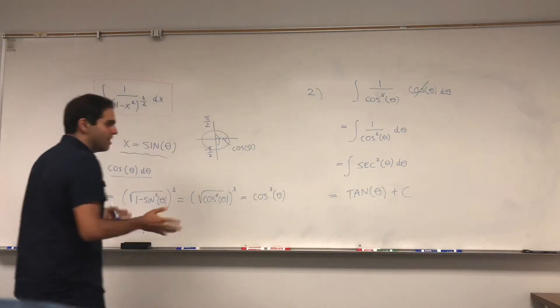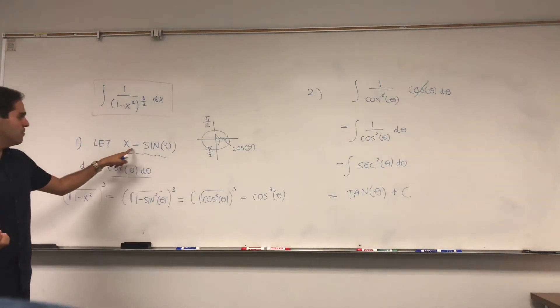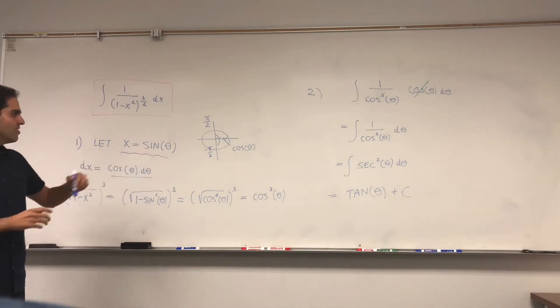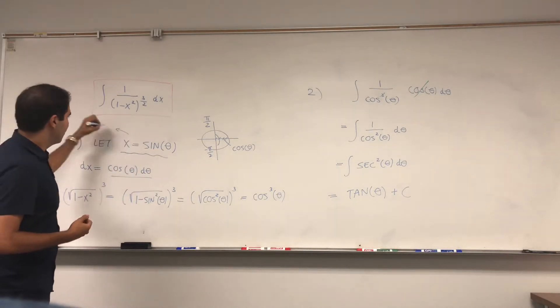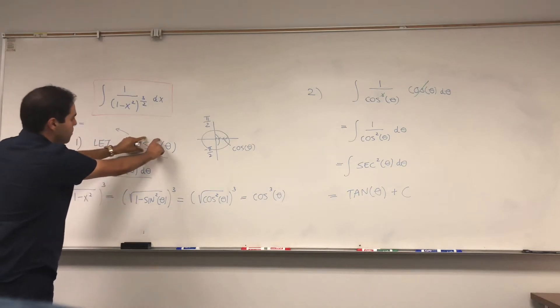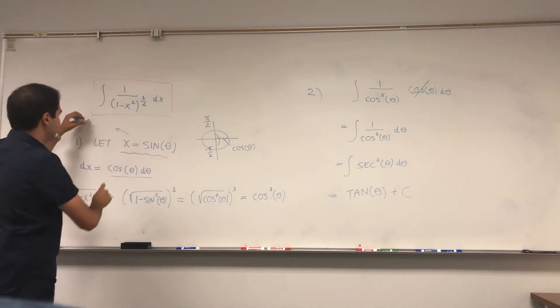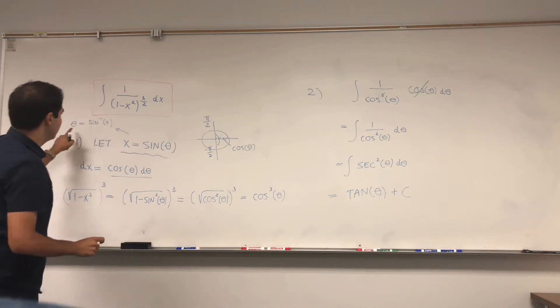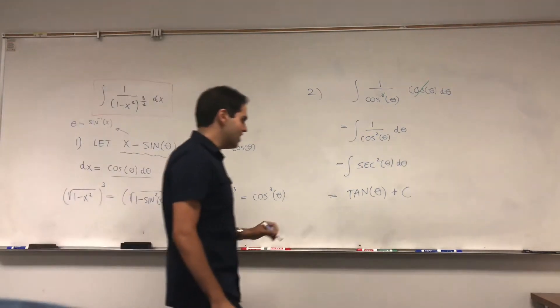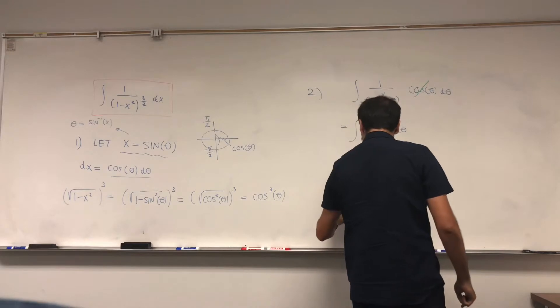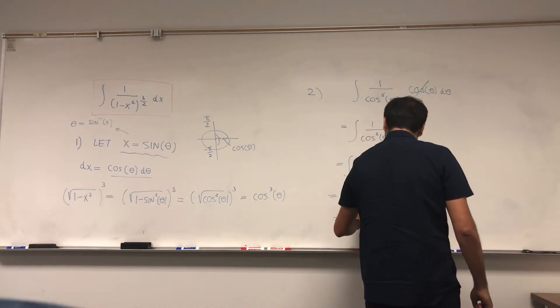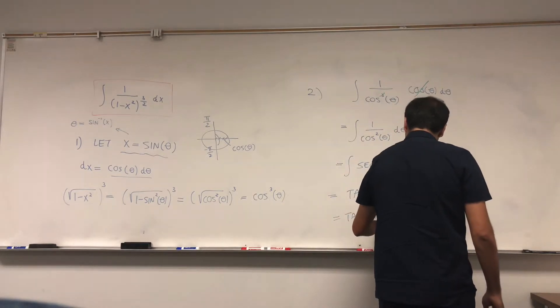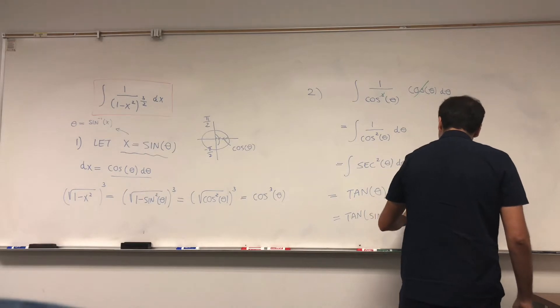However, that's not really all, because since x equals sine of theta, or theta equals—remember to put an arcsine here—theta is arcsine of x. So the answer is tangent of arcsine of x plus a constant.